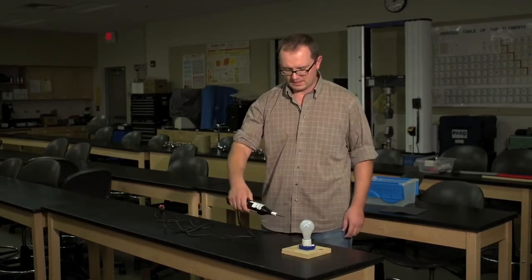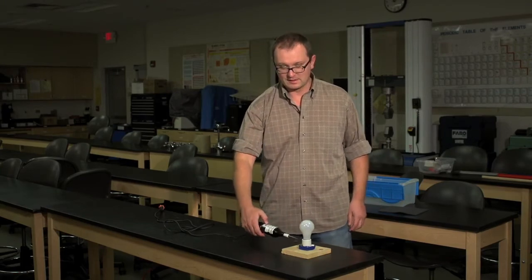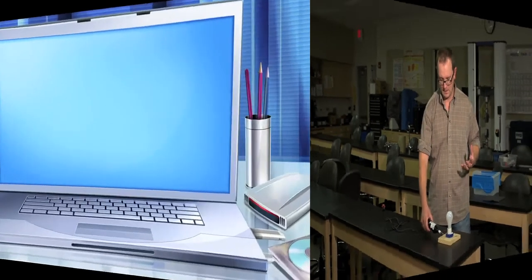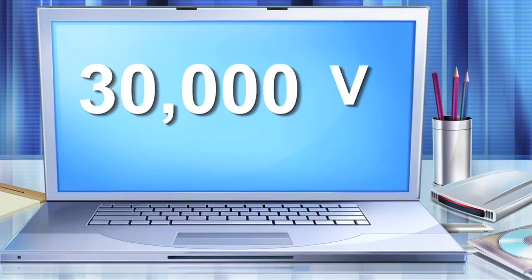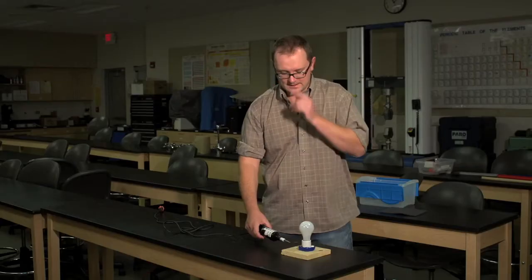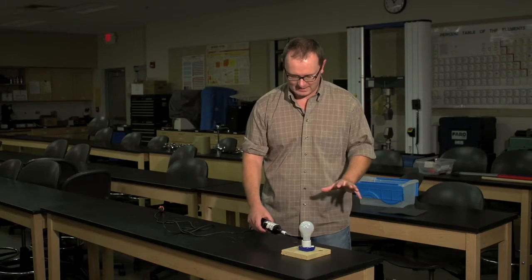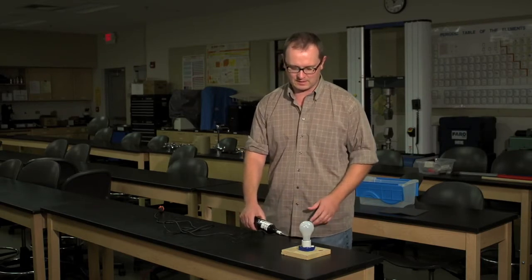One of the things we like to do with this is demonstrate you can exceed the breakdown voltage of air. I've written that number down. It's 30,000 volts per centimeter. Now, there's a lot of factors that can affect that number. This is a good starting spot. So just remember that number: 30,000 volts per centimeter.